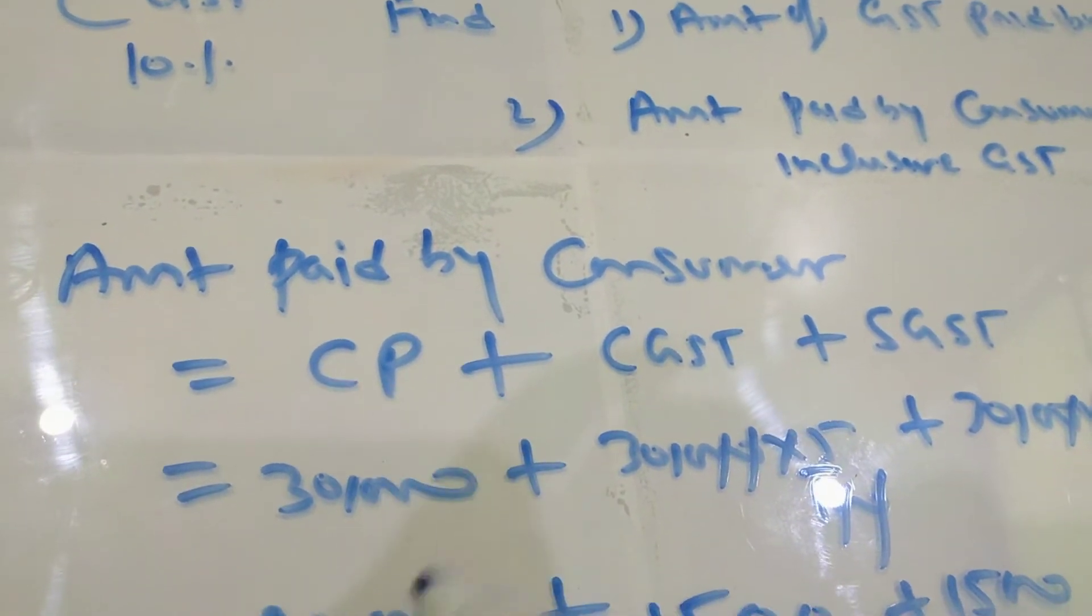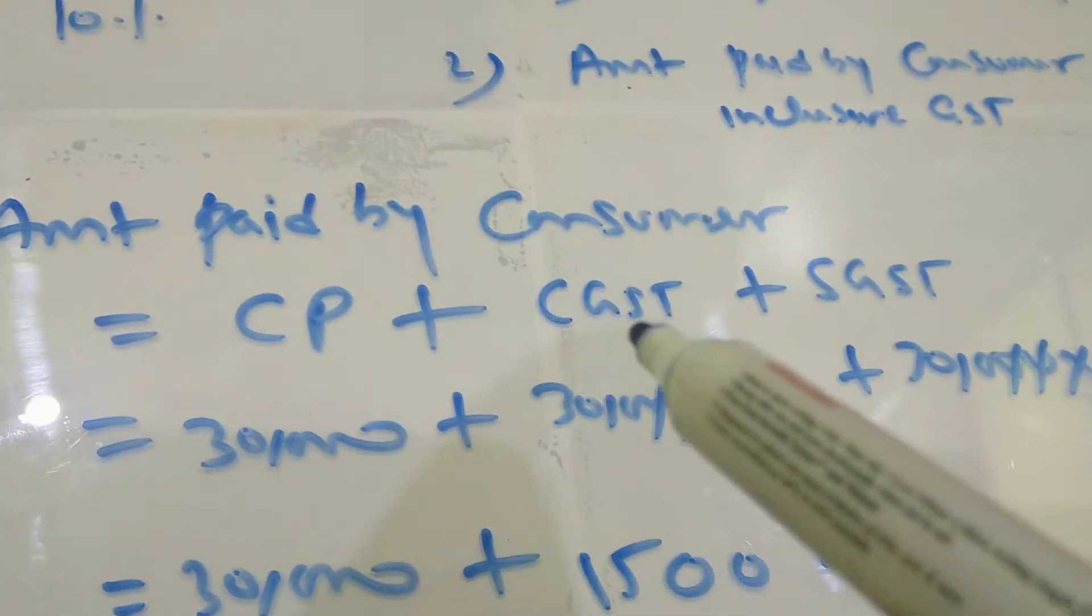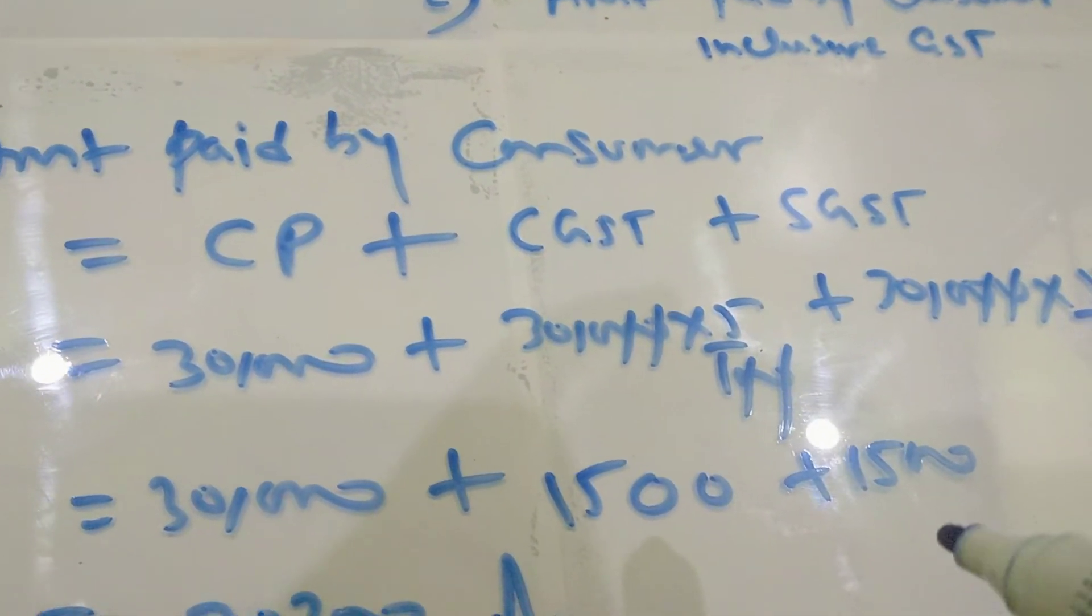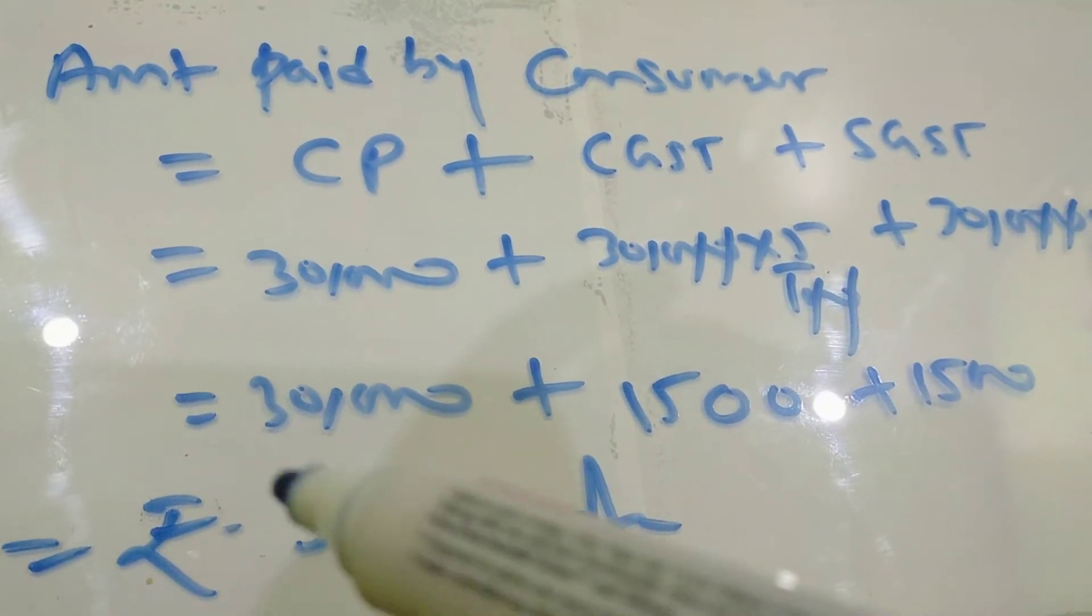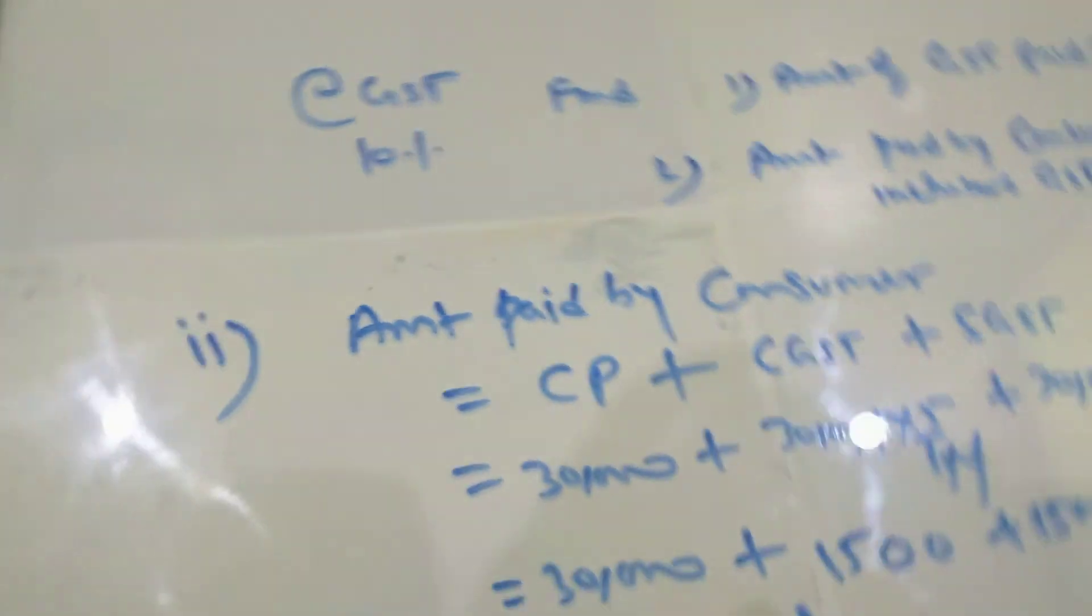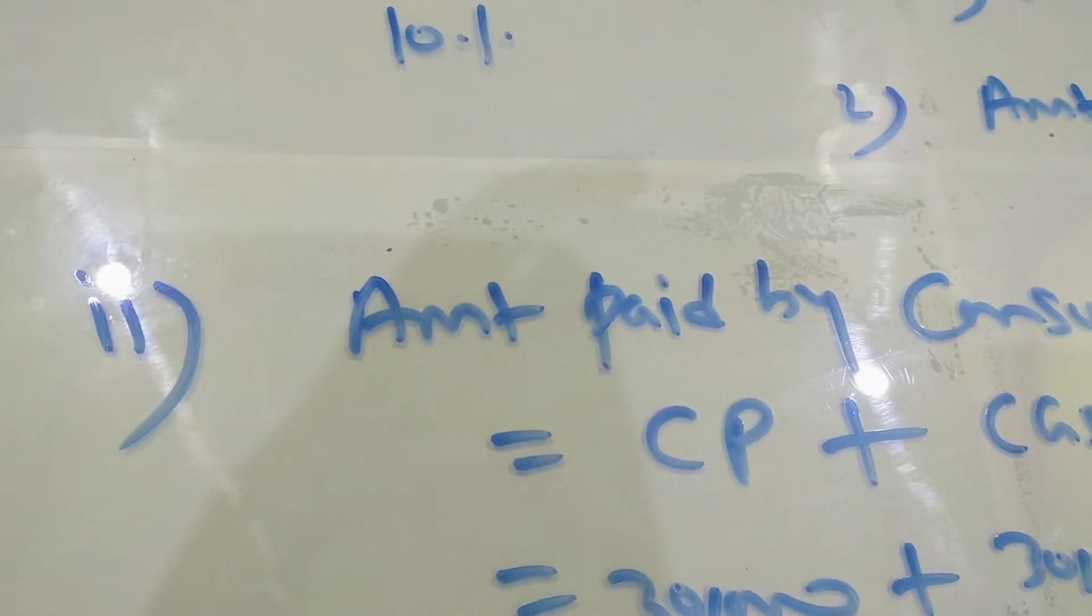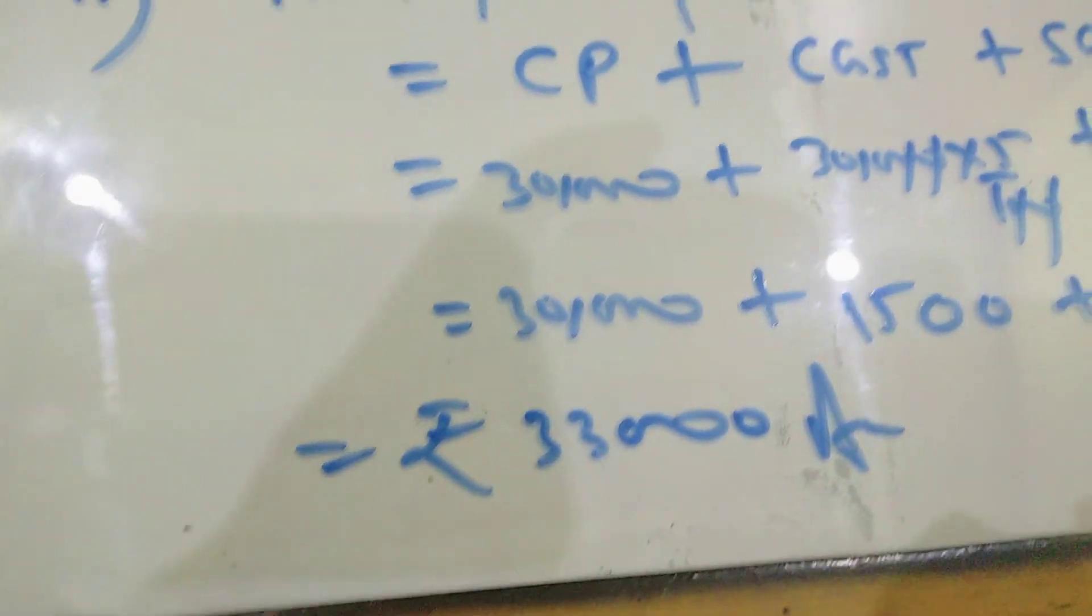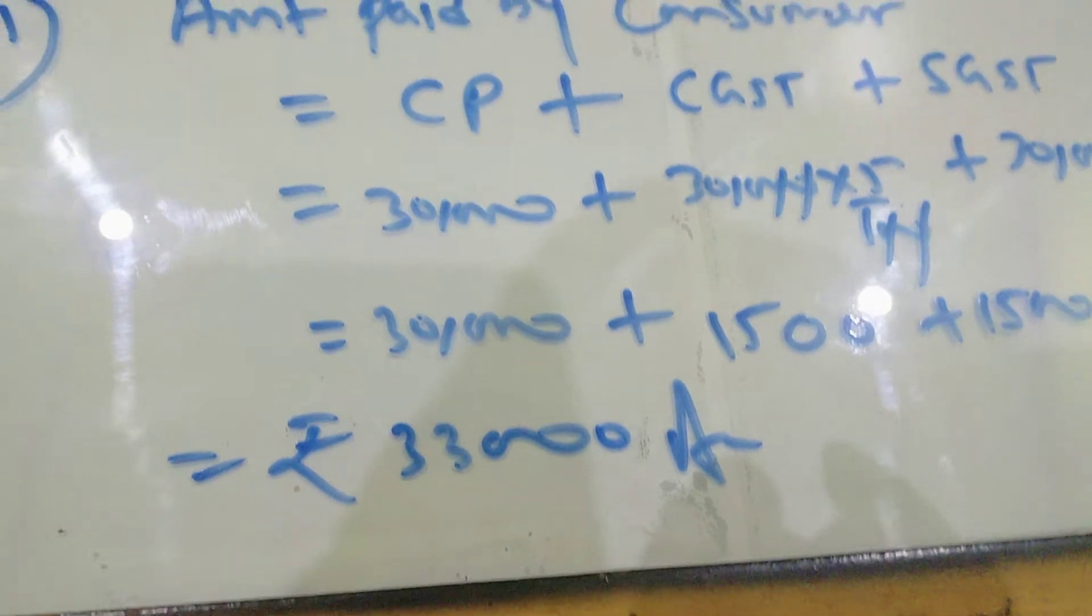Cost price is 30,000 rupees. CGST is, because it is 10%, so 5% has to go for central and 5% for state. So 1,500 plus 1,500, that is 3,000 rupees tax. So this is 33,000. This is the final answer for this question.